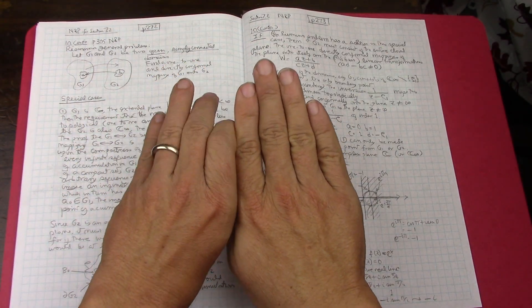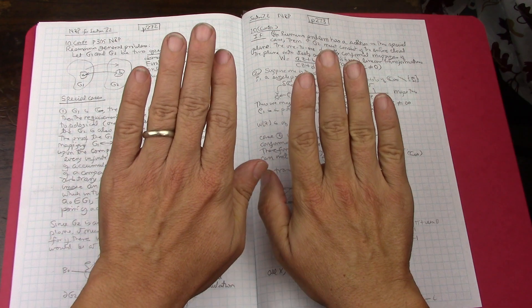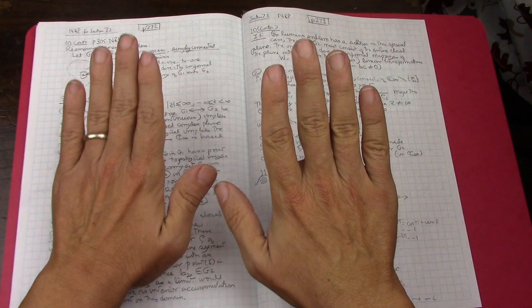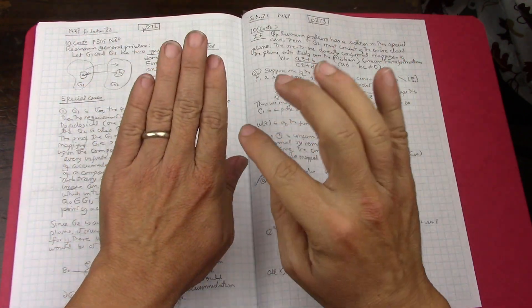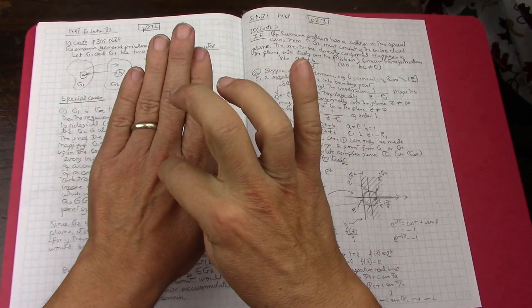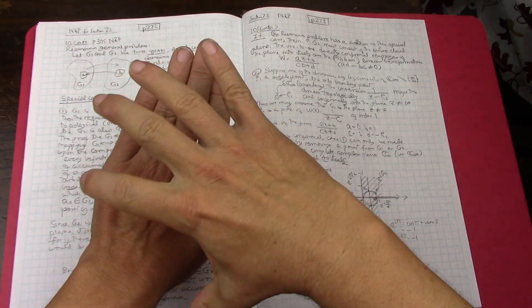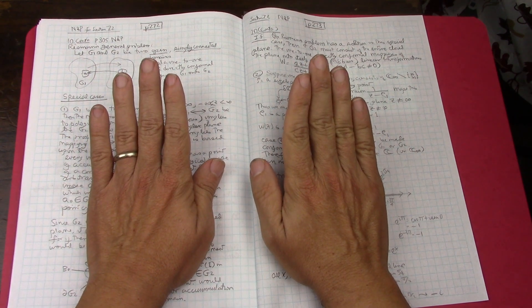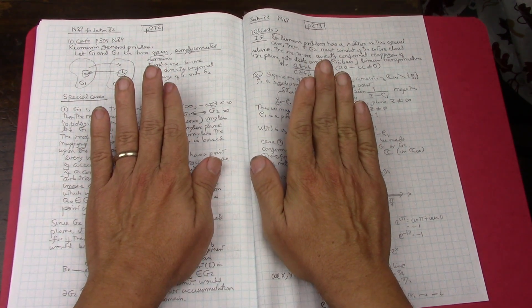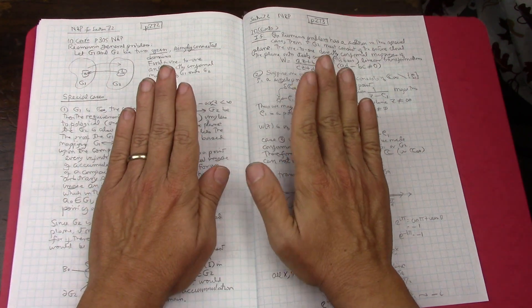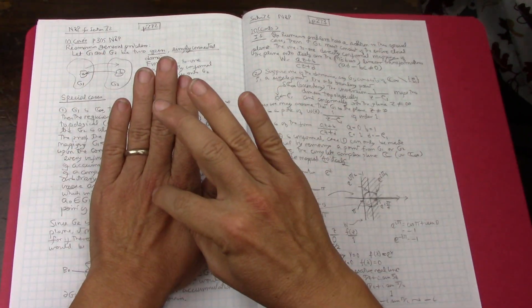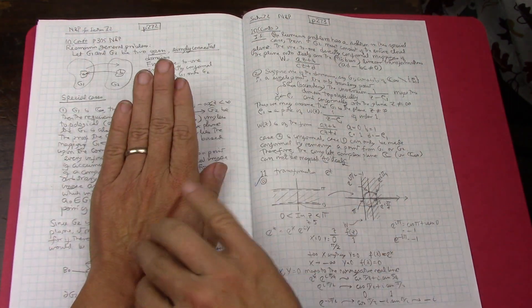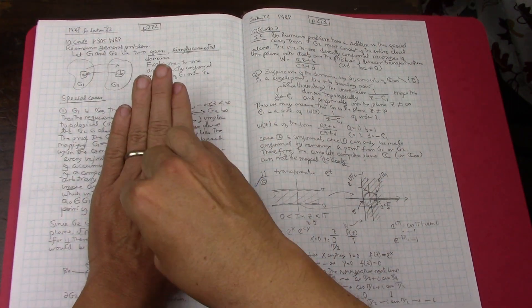So problem 10 is explaining Nevanlinna and Paatero the reasons why for the Riemann mapping theorem you have the Z plane and the W plane and you cannot map one onto the other completely you cannot. At least one of them has to have a point that is not in your domain and the way that I liken it is when you're painting a room you cannot paint under your feet right.